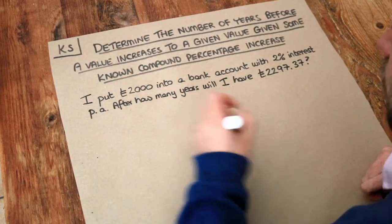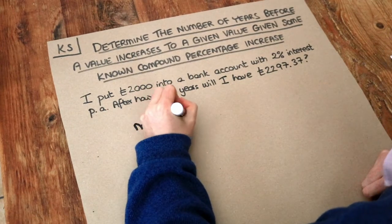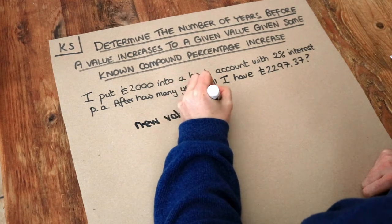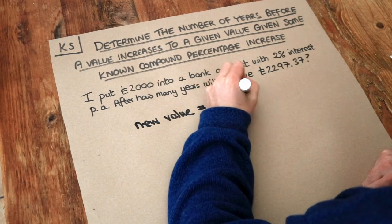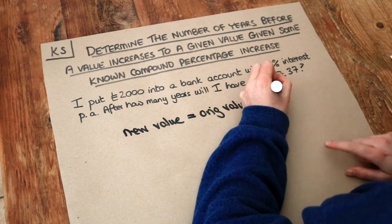The formula we use for any kind of compound change is this: the new value after the compound change is equal to the original value multiplied by the decimal multiplier to the power of n.